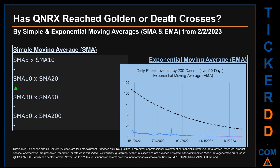Has QNRX price reached golden or death crosses? Golden cross and death cross are basic signals that compare average prices across two specified trade day ranges — a short-term versus a long-term range, for example 5 days versus 10 trade days. A golden cross is a bullish signal that appears when a ticker's short-term moving average crosses above its long-term average. Vice versa, a death cross is a bearish signal when the short-term crosses below its long-term moving average. For our opinionated analysis, we looked at both simple moving average (SMA) and exponential moving average (EMA).